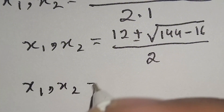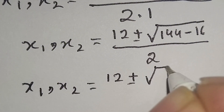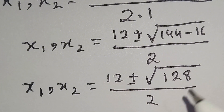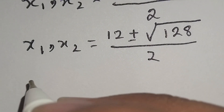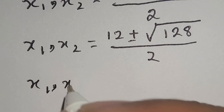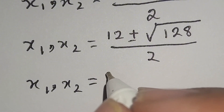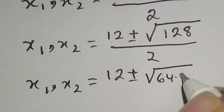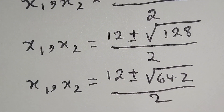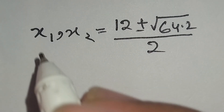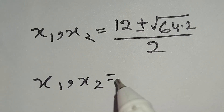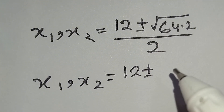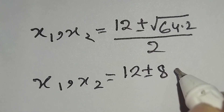Here x1 and x2 is equal to 12 plus or minus square root of 144 minus 16, which equals 128, over 2. We can write 128 as 64 times 2. So x1 and x2 is equal to 12 plus or minus square root of 64 times 2, which is 8 times square root of 2, over 2.